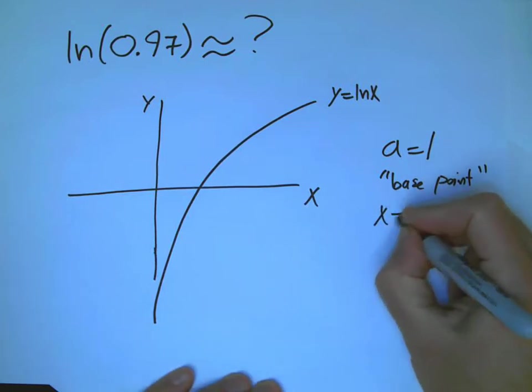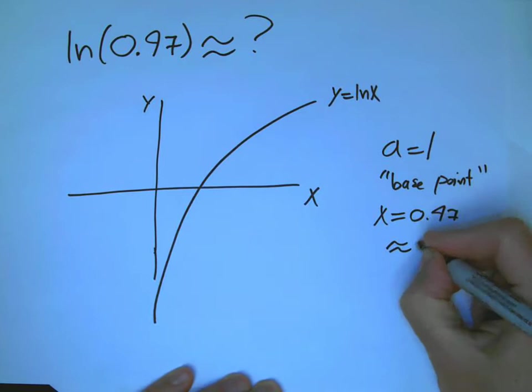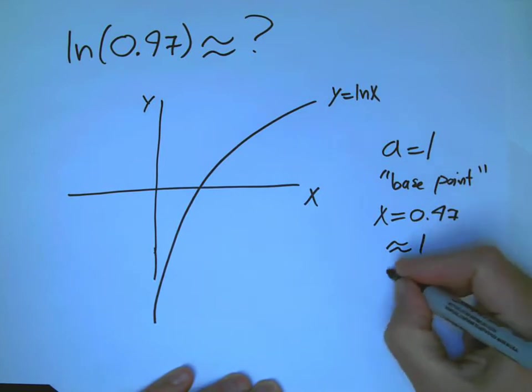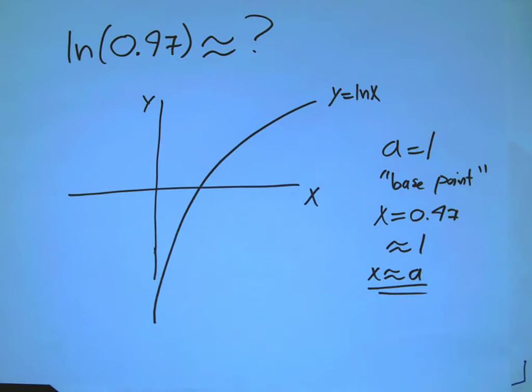And x is 0.97. That's approximately equal to 1. So, x is close to a. And that's the thing you want to look for in these kinds of problems.